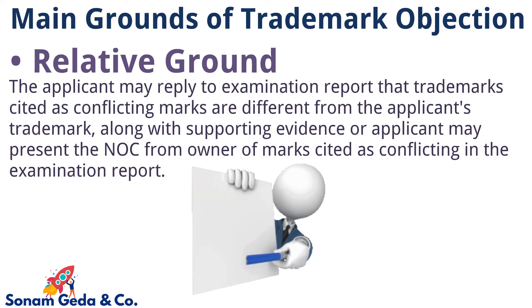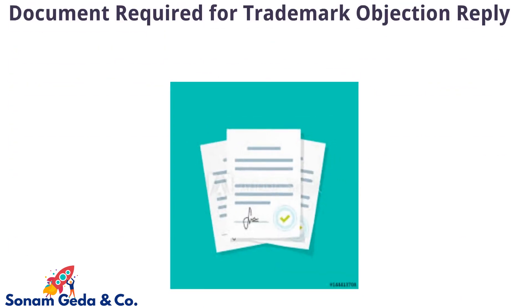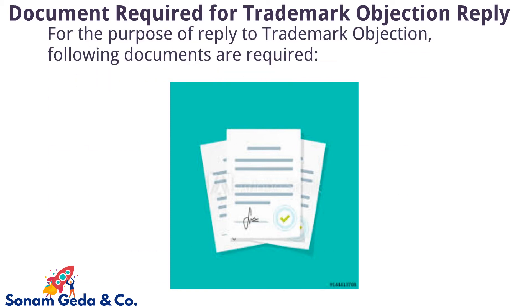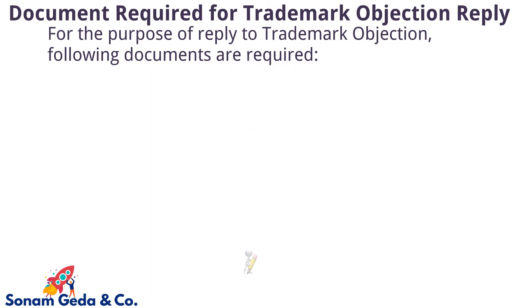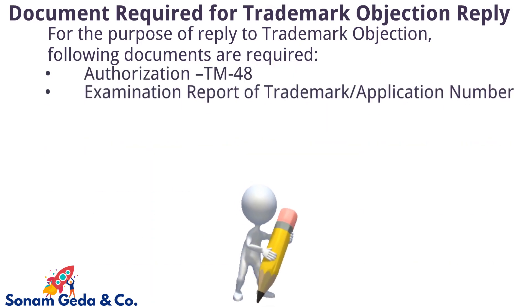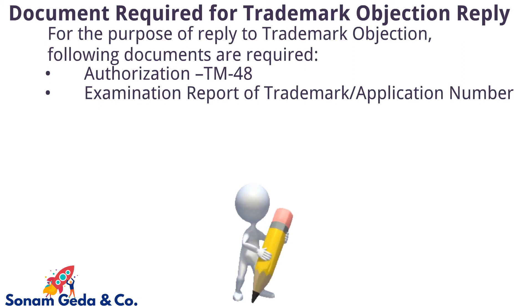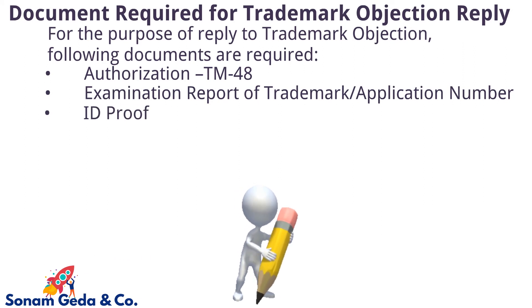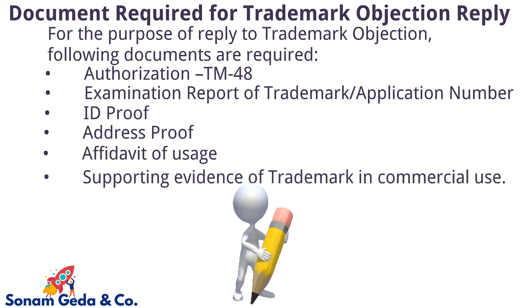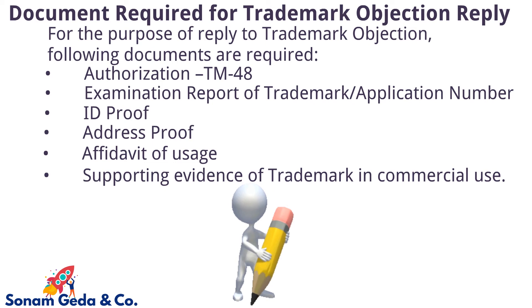Documents required for trademark objection reply: For the purpose of replying to the trademark objection, the following documents are required — Authorization Trademark form 48, examination report of trademark or application number, ID proof, address proof, affidavit of usage, and supporting evidence of trademark in commercial use.